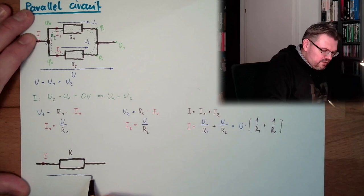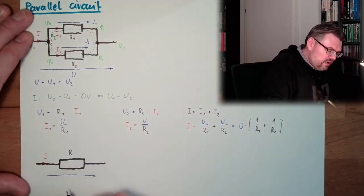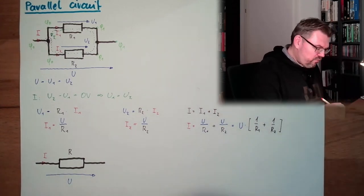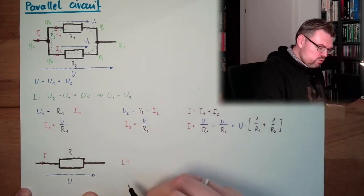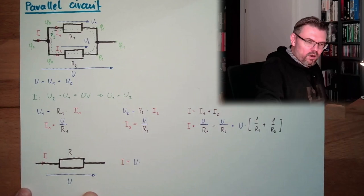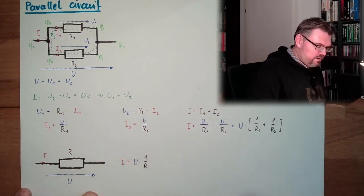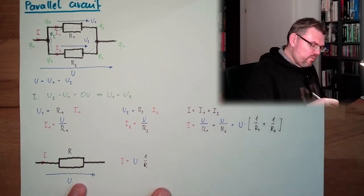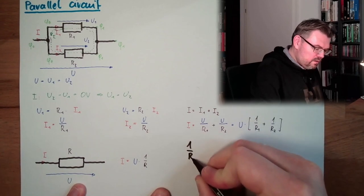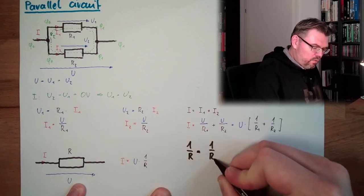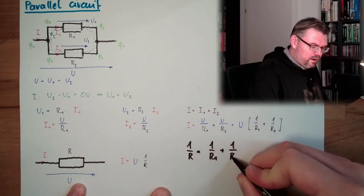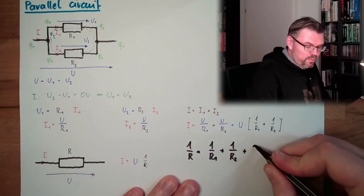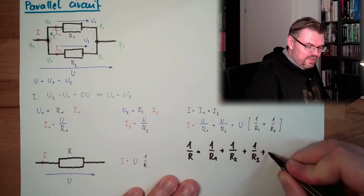So from the connections of this resistance, this resistance and this combination, there is no difference in U and I, so let's write down, in this form, I equals U multiplied by 1 divided by R. And here, if you compare those two things, you realize 1 divided by R equals 1 divided by R1 plus 1 divided by R2.